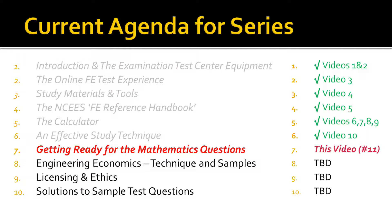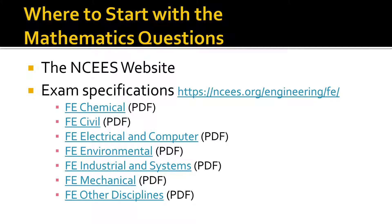The first thing I'm showing here is the current agenda for the series. This is now part 7, and it's video number 11 because I've taken multiple videos for some of the previous parts, in particular the calculator. Going forward, as per the current plan, we just have three more parts to cover. So where do we start with the mathematics questions? The first place to start is the NCEES website. You should make sure you pull down the exam specification for the test from their website. On screen I have the link, and all seven of the FE exams currently offered each have a PDF file showing the specification, telling you what sections there are and what types of topics to expect.